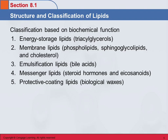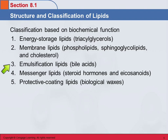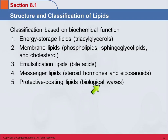If we classify lipids based on biochemical function, these are the groups we end up with: energy storage lipids, which are the triacylglycerols; membrane lipids, which include phospholipids, sphingoglycolipids, and cholesterol; emulsification lipids, which include the bile acids; messenger lipids, such as steroid hormones and eicosanoids; and protective coating lipids, which are biological waxes. We're going to examine each of these categories.